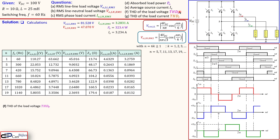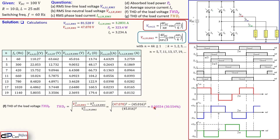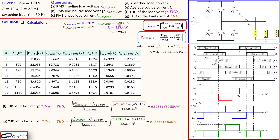The THD for the load voltage is given by √(V_rms² − V₁_rms²) / V₁_rms, using the total RMS line-to-neutral voltage from question B and its fundamental component. This gives a THD of 0.30554. The THD for the load current uses the total RMS line-to-neutral current and its fundamental harmonic RMS value, giving a THD of 0.06636.